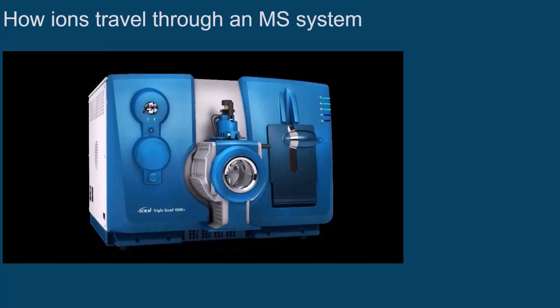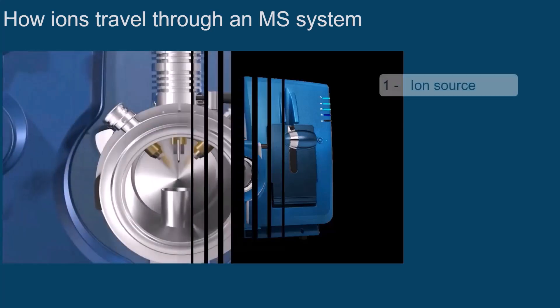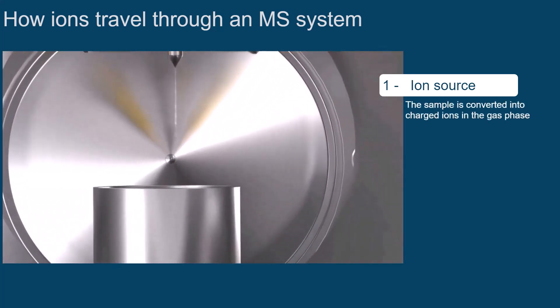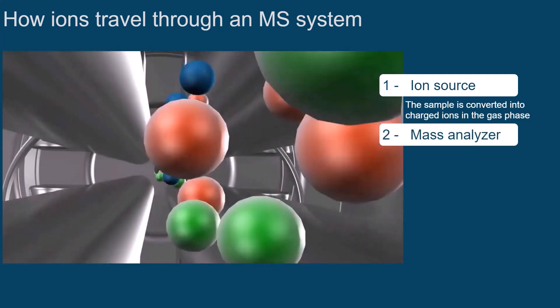This video summarizes how ions travel through an MS system, using the example of a triple-quadrupole mass spectrometer. In the ion source, the sample is converted into charged ions in the gas phase. From there, the ions enter the mass analyzer.